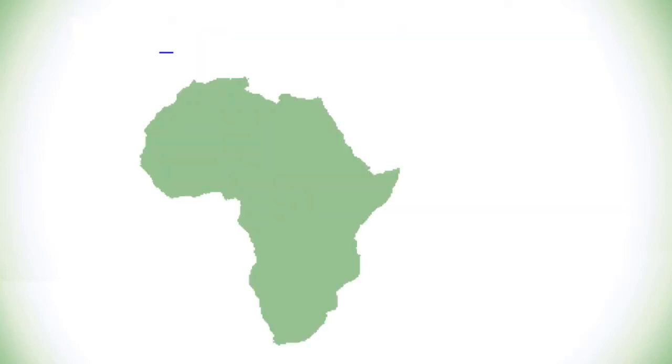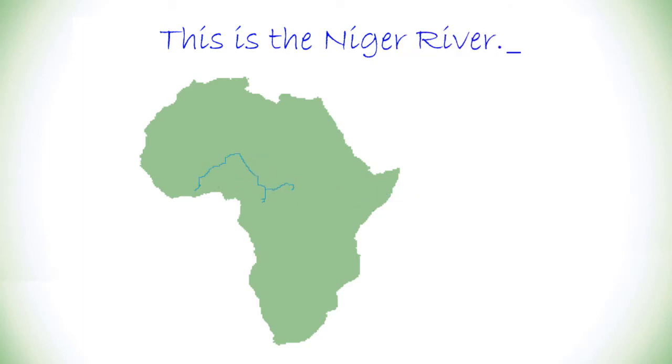This is the Niger River. The Niger River runs away from the sea into the Sahara Desert, and then takes a sharp right turn near the ancient city of Timbuktu.